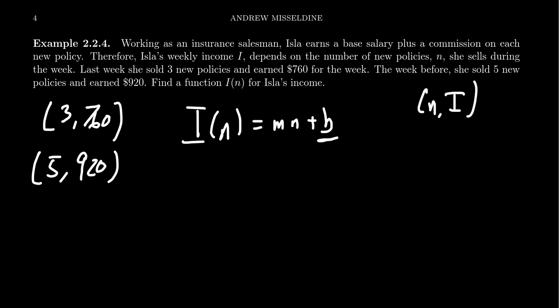If she sold nothing, how much would she make? And then the m here, the slope of the line is going to give us, it's going to tell us how much money Isla makes per policy she sells. And so you'll notice here that because we have these two data points, we have to fit a line. We have to fit a line to two points, in which case I would find the slope using the slope formula.